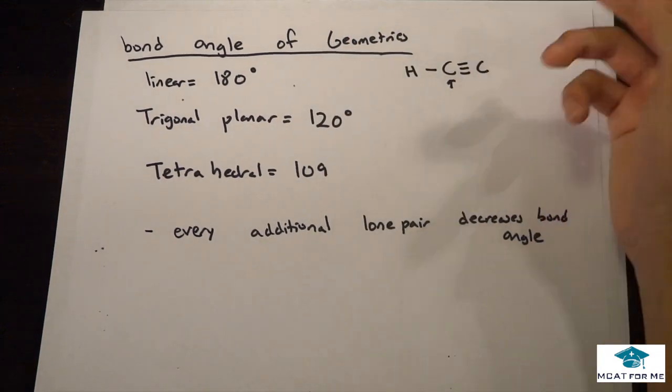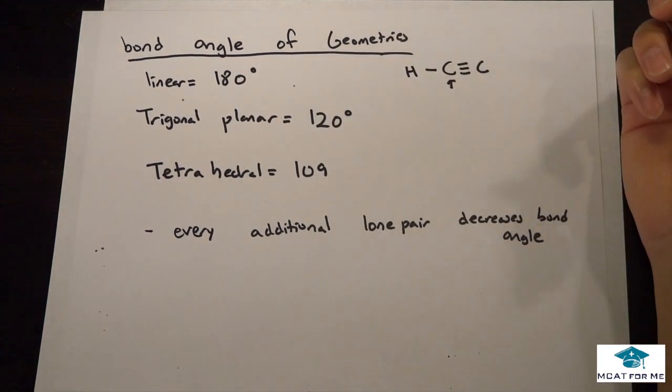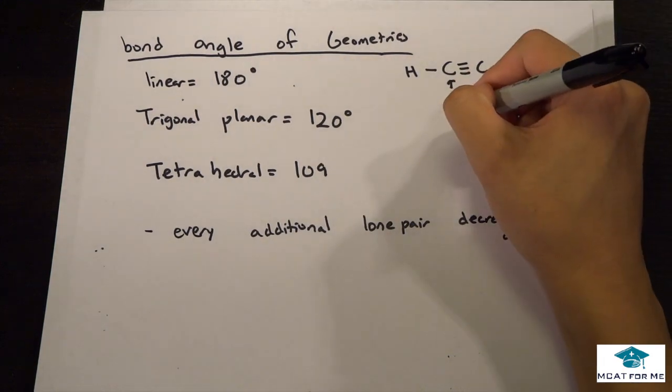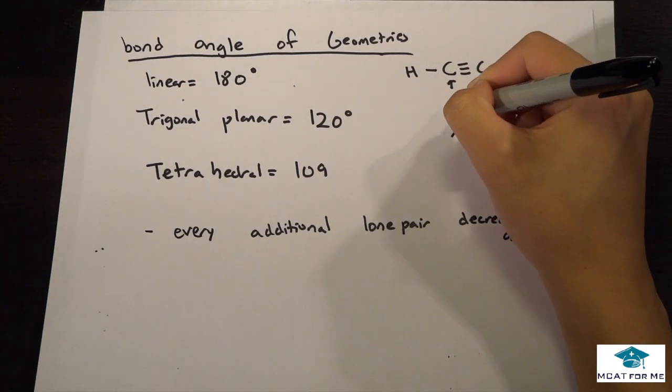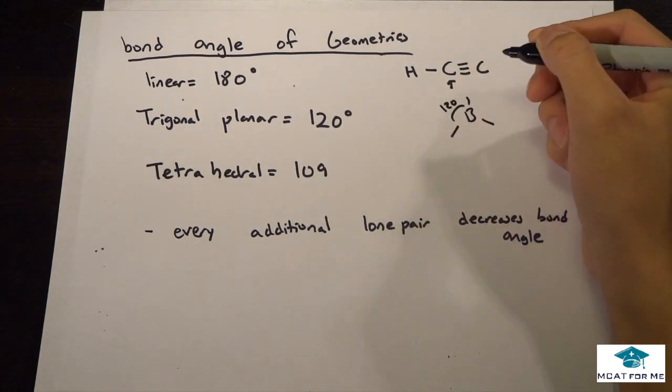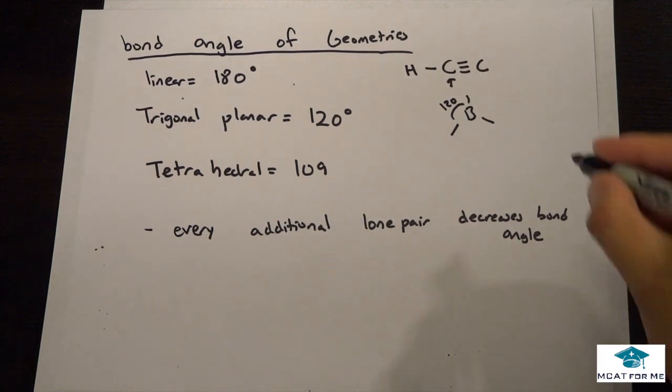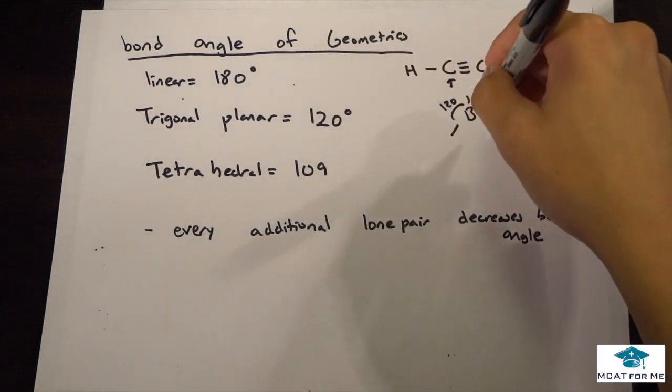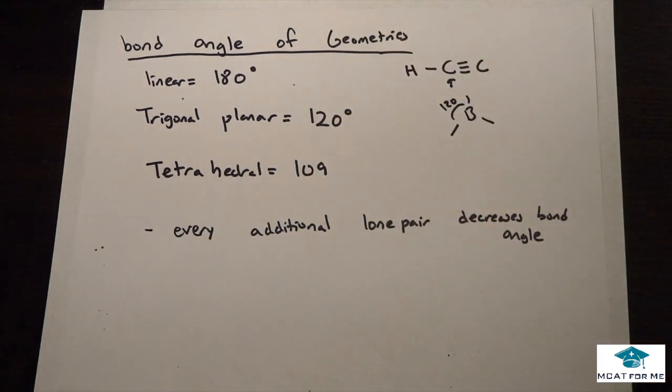Triple bond - I mean something that is linear would have to have 180 degrees, right? There's no other way that it would look right. It just wouldn't make any sense. And for one like this, the bond angle is 120. That should make sense as well because 360 is the whole circle divided by 3 - 120. That's how we got that.